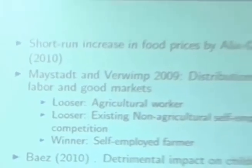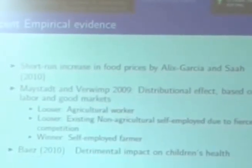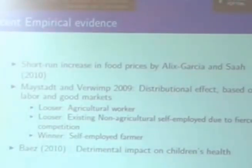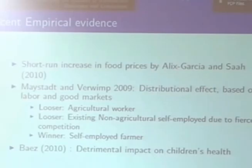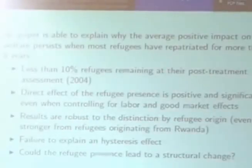There has been recent empirical evidence looking at these effects. To give a sense of the recent literature: Alex Garcia assesses the short-run impact on food prices; in another paper I look at distributional effects based on the labor and goods markets; and Baez assesses the detrimental impact on children's health. But what's the relationship with structural transformation? No paper, including mine, is able to explain why the average positive impact on the refugee-hosting population persists even in areas where refugees left about eight years before. There is a kind of hysteresis effect that we fail to explain.